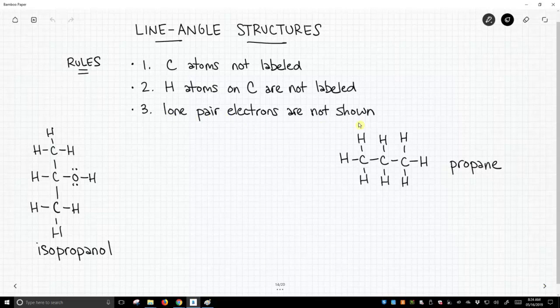Let's see how this translates into a structure. On the bottom left, we have isopropanol. Isopropanol is not a huge molecule to draw, but it takes some time to draw out that structure. So let's see what it looks like as a line-angle structure. That's it. That is isopropanol as a line-angle structure.